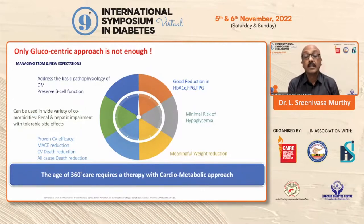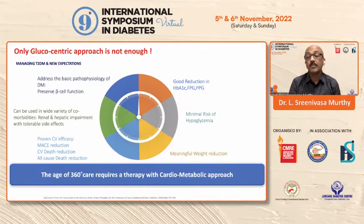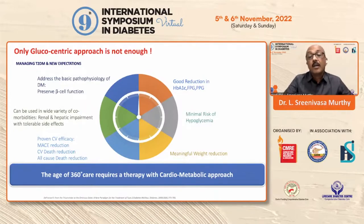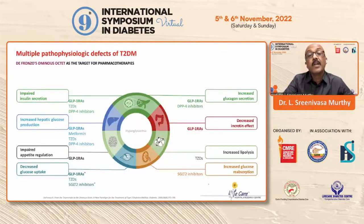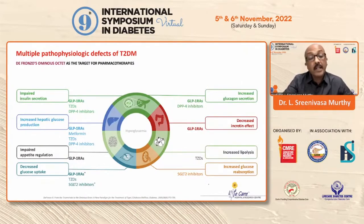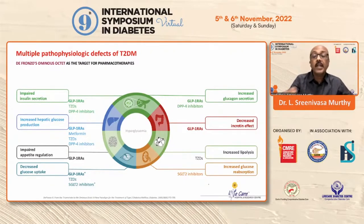Dr. Tejas showed us the case with only FBG, PPG, and A1C, and never talked about the cardiometabolic risk, which we need to evaluate at baseline so that we can prevent complications. At the end of the day, whether it is the glucose-centric, cardiometabolic, or ASCVD approach, our essential goal is to prevent complications. We need to choose the right drug at the beginning to prevent complications — that is the problem with the glucose-centric approach: it doesn't categorize risk stratification.